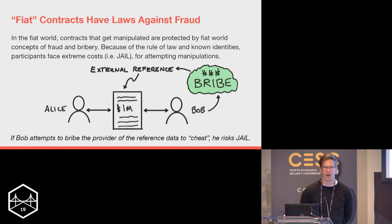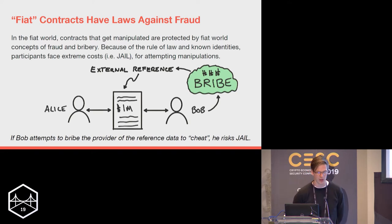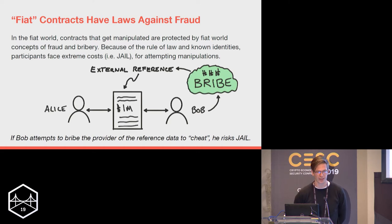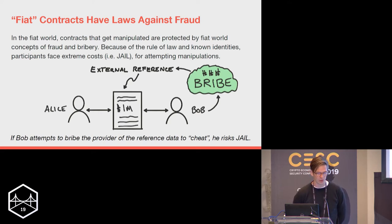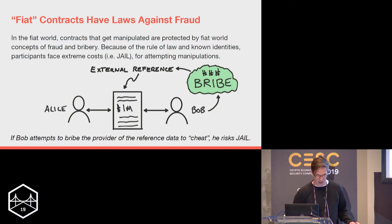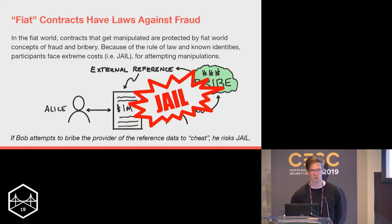Why does this exist? In the fiat world there's a very useful concept: laws against bribery, manipulation, and fraud. In our toy example, Bob and Alice have a million-dollar contract — each puts in $500K — and there's some external reference determining the payout. Alice could steal Bob's $500K or Bob could steal Alice's if they can bribe that external reference. In the fiat world this doesn't happen because Bob goes to jail.